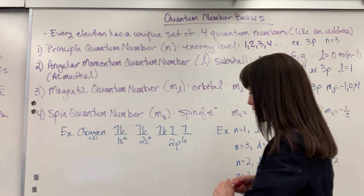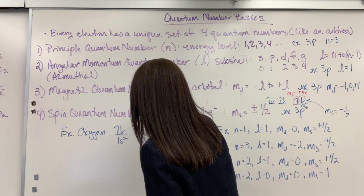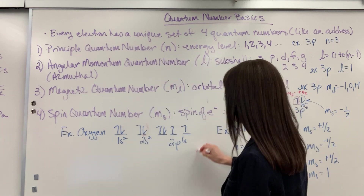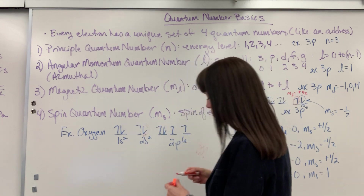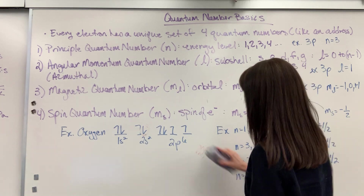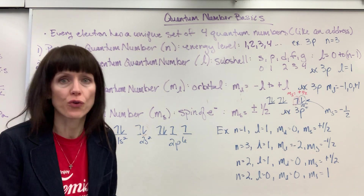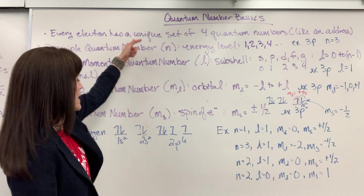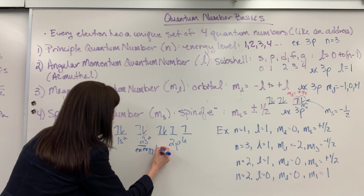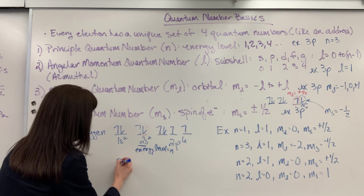Let's say I circle this one electron and we want to give it its four quantum numbers. That electron — first we go to energy level. The energy level equals N, so N equals 2.